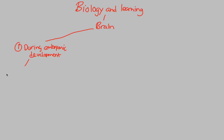Two things we really want to focus on are regulated gene expression — which I'll abbreviate as gene EXP — and signal transduction. One thing you'll notice about these flowcharts is that I often abbreviate many things. These abbreviations are necessary because they force you to think about what was abbreviated, which is more efficient than writing a word over and over again. During embryonic development, both gene expression and signal transduction give us what is known as synapse development.